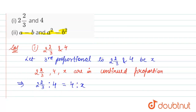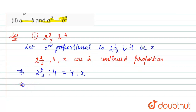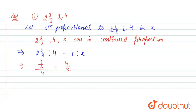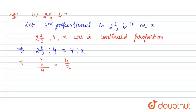That implies 3 twos are 6, and 6 plus 2 is 8, so 8 by 3 divided by 4 is equal to 4 by x. So we can write it as 8 divided by 3 into 4 is equal to 4 divided by x.